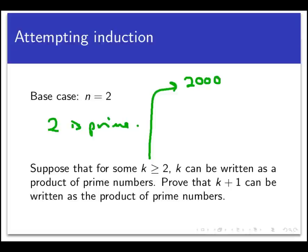Does this help you factor 2,001? Not really. There's no natural relationship between the factorization of 2,000 and the factorization of 2,001. So we're not going to get a lot of traction out of our induction hypothesis here.